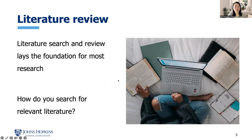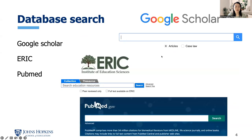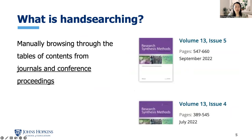Literature search and review lays the foundation for most research. How do you search for relevant literature? Some of you may have used Google Scholar, ERIC, or PubMed. For this type of searches, we call it the database search. This is the most common search technique, whereas there are some other supplementary search techniques. One such supplementary technique is called hand searching.